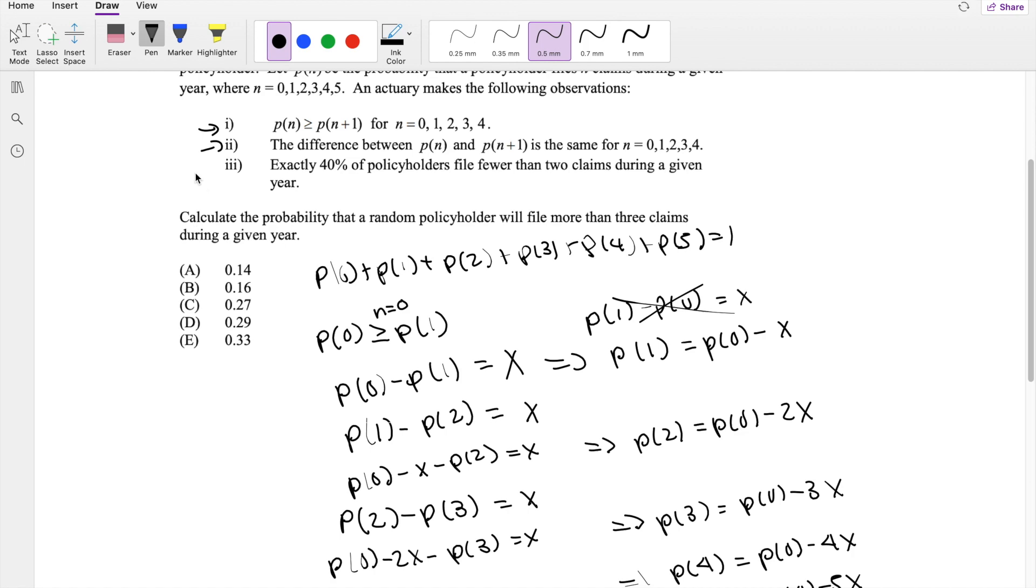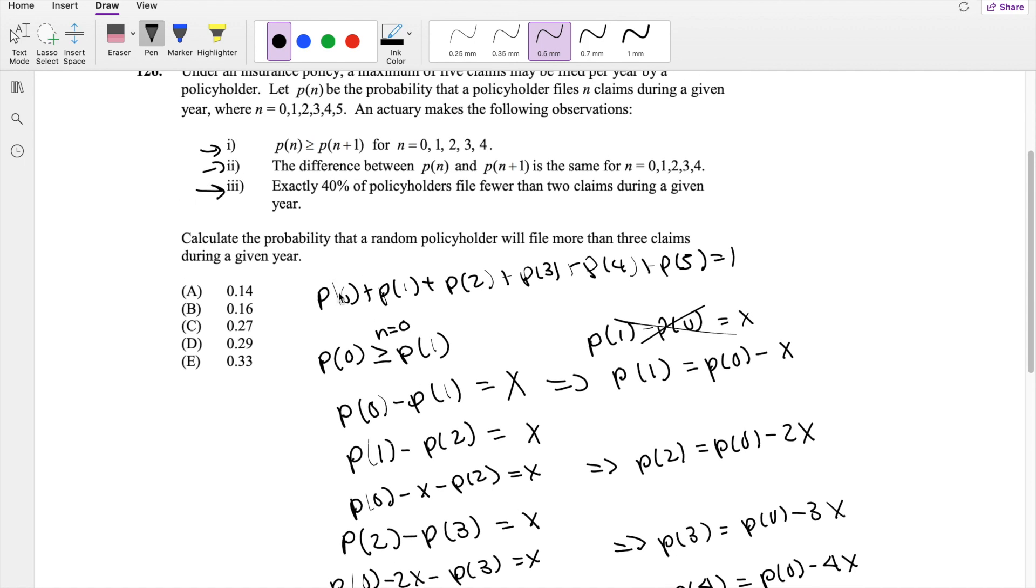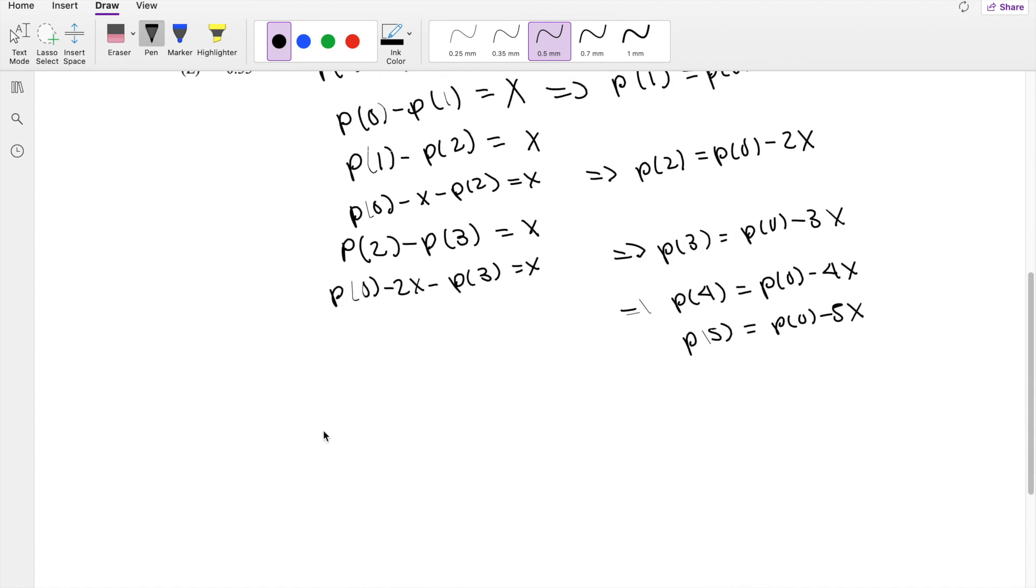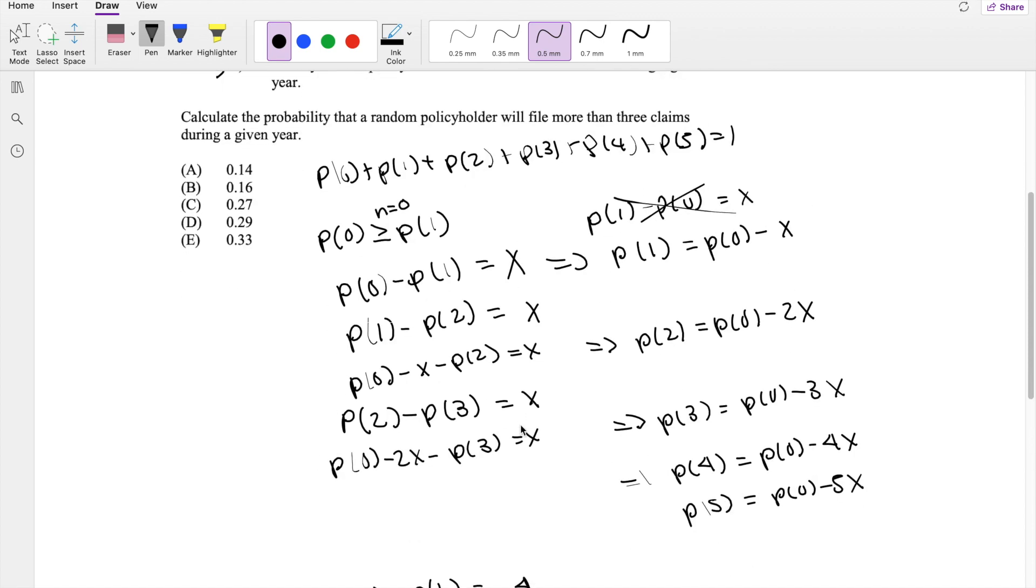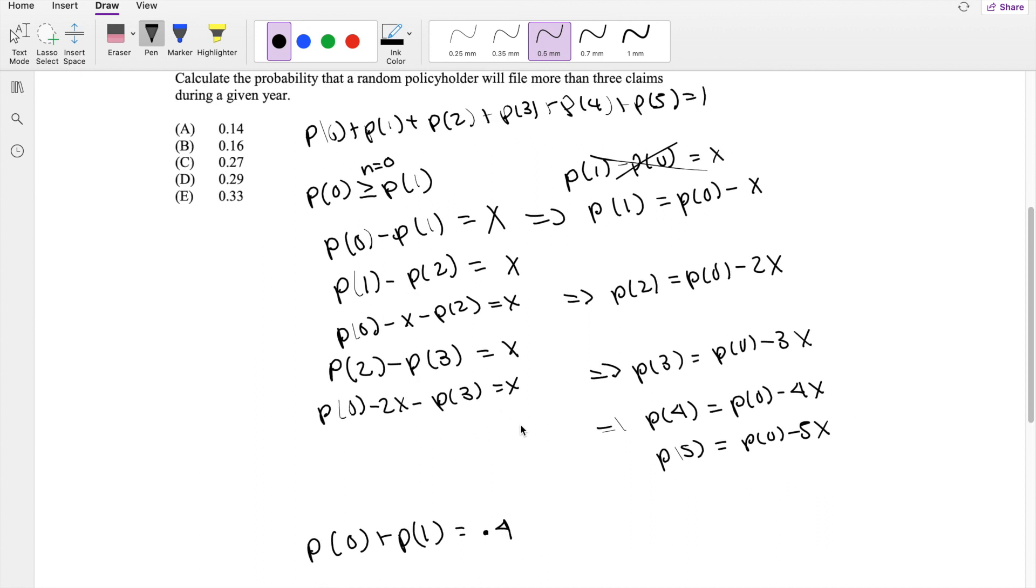Anyways, statement 3 says exactly 40% of policyholders file fewer than 2 claims in a given year. So that means fewer than 2 claims. That means the probability of 0 and the probability of 1 must be equal to 0.4. Okay, so we have a lot of information here. Let's just clean it up a little bit.